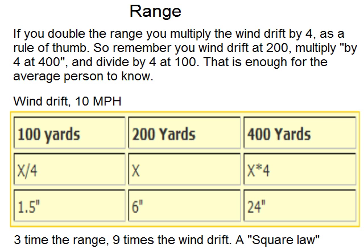So if you remember your wind drift at 200 yards for 10 miles per hour — let's say 6 inches — for 400 yards you just multiply by 4, so that's 24 inches. At 100 yards, you divide by 4. If you're just deer hunting, that might get you through the day: at half the range it's only an inch and a half, but at 400 yards it's two feet. You might want to wait for the wind to stop, or get a bit closer.